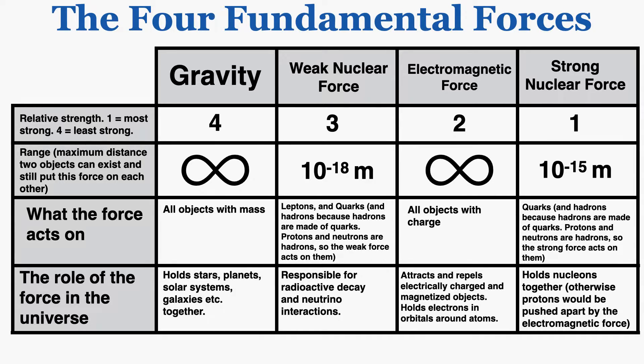Gravity acts on all objects with mass, and the electromagnetic force acts on all objects with charge. The weak nuclear force acts on very specific parts of an atom — specifically leptons and quarks, and also hadrons because hadrons are made of quarks (protons and neutrons are hadrons). The strong nuclear force acts on quarks but not leptons.